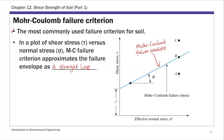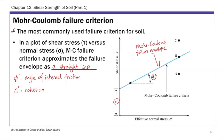Since this Mohr-Coulomb failure envelope is a straight line, it's defined by just two strength parameters. The first is the angle of the slope, called phi prime — the angle of internal friction. The second is the y-axis intercept with the shear stress axis, called cohesion c prime. These are written in effective stress space as phi prime and c prime, or phi and c in total stress.